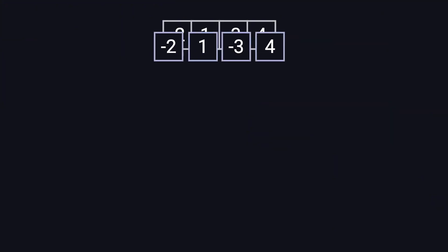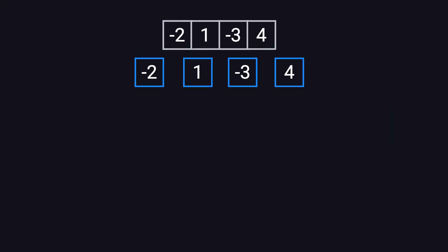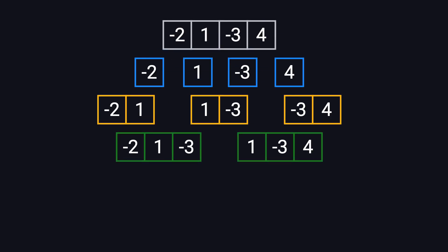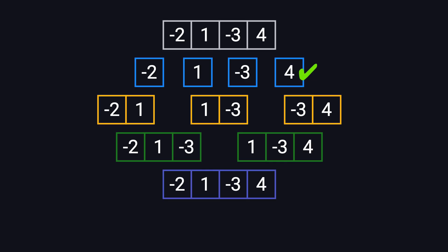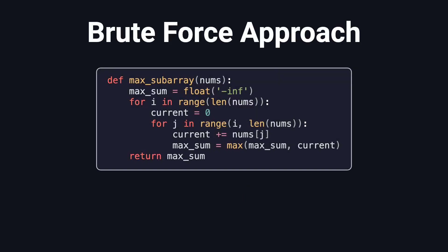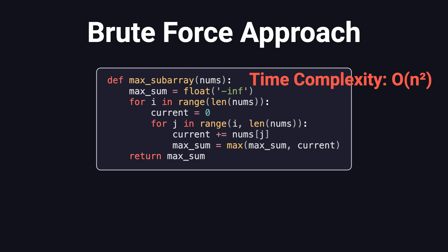We list out all possible contiguous subarrays and calculate their sums. There are four ways to choose just one element, three ways to choose two elements in a row, two ways to choose three elements, and one way to pick all four. That gives us a total of 10 combinations. The largest sum among them is 4. We can also write a simple Python snippet to do the same thing — loop through every possible starting and ending index, calculate the sum of that subarray, and keep track of the largest one we find. This approach is easy to understand and not too hard to code, but it's not very efficient. If the array has n elements, the time complexity is O(n²), so it's not ideal when you're working with large input.